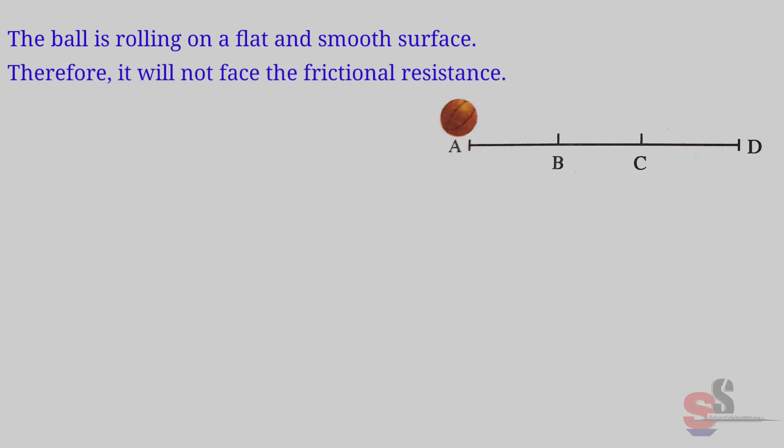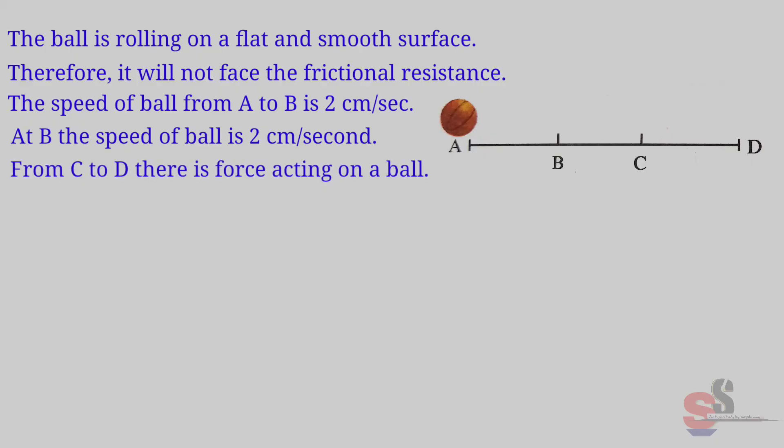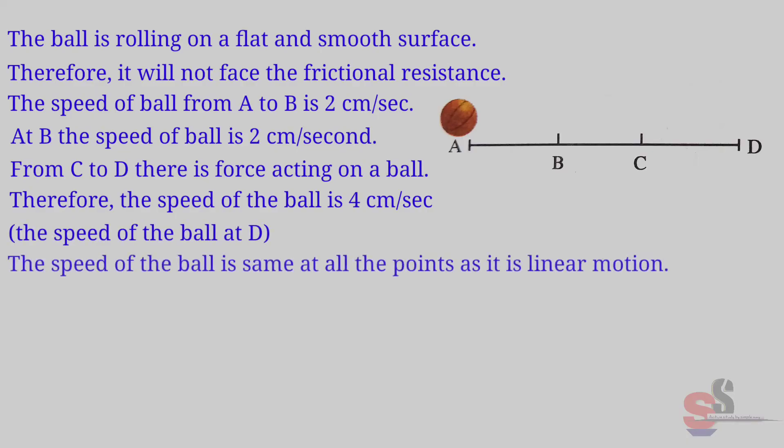The ball is rolling on a flat and smooth surface. Therefore, it will not face the frictional resistance. The speed of the ball from A to B is 2 cm per second. At B, the speed of the ball is 2 cm per second. Now from C to D, there is a force acting on the ball. Therefore, the speed of the ball is 4 cm per second. The speed of the ball is the same at all the points as it is linear motion.